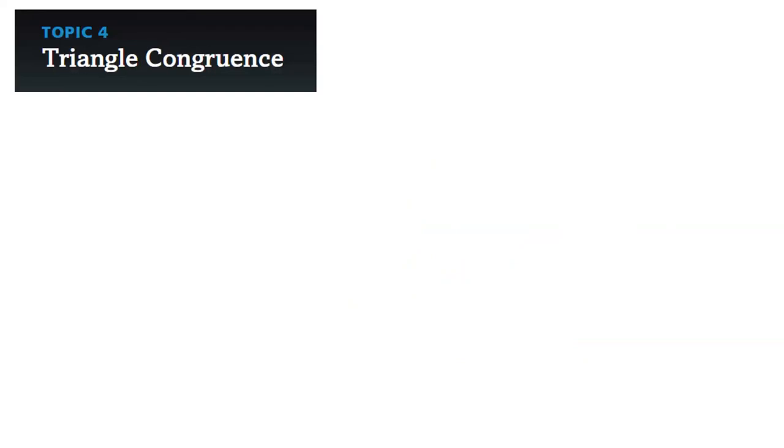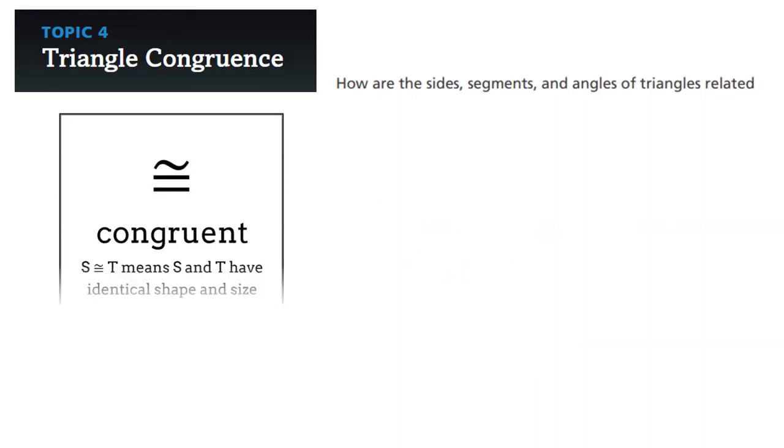Topic four is about triangle congruence. How are the sides, segments, and angles of triangles related? The symbol of congruent is an equal sign with a wiggly line on top of it.